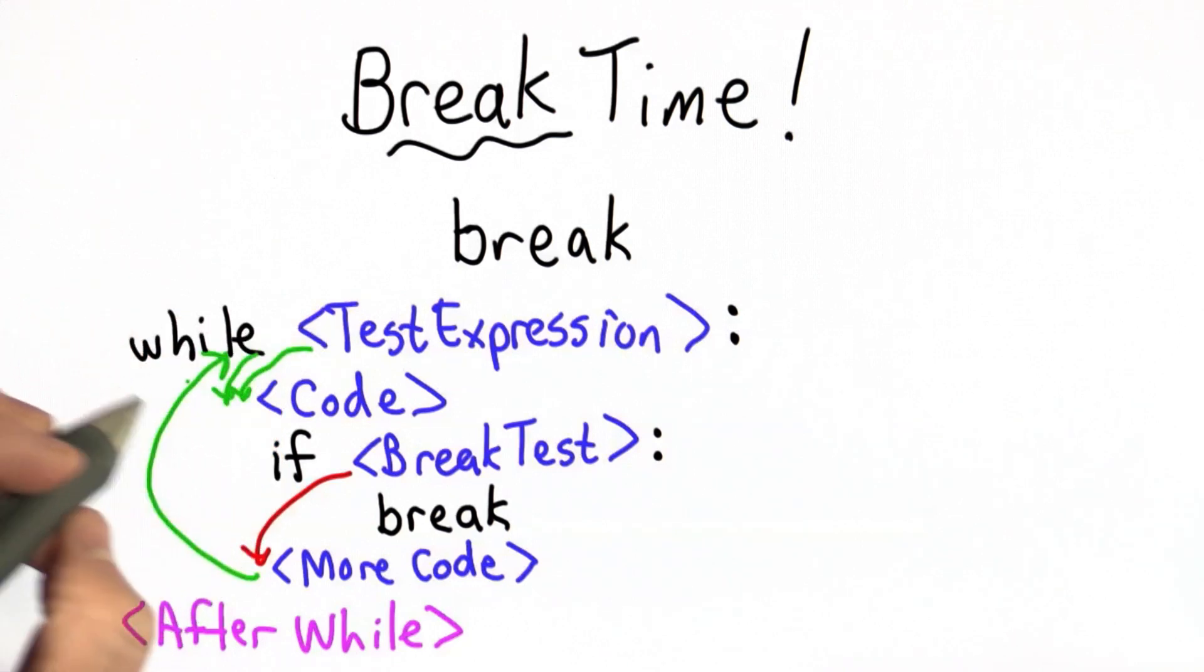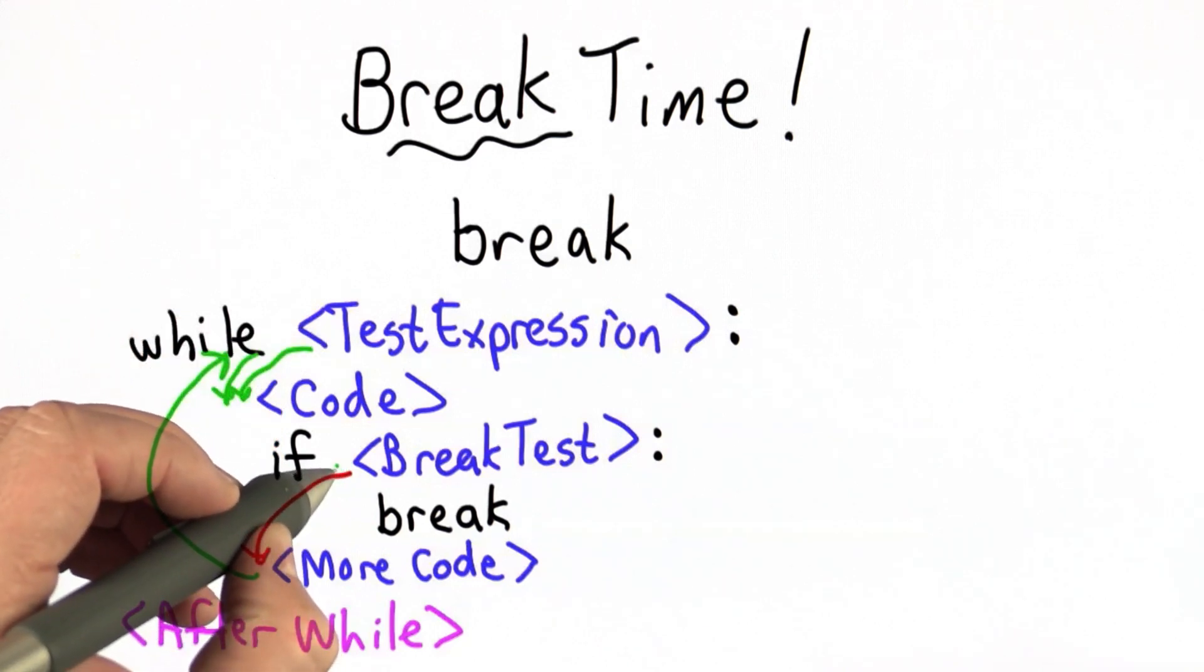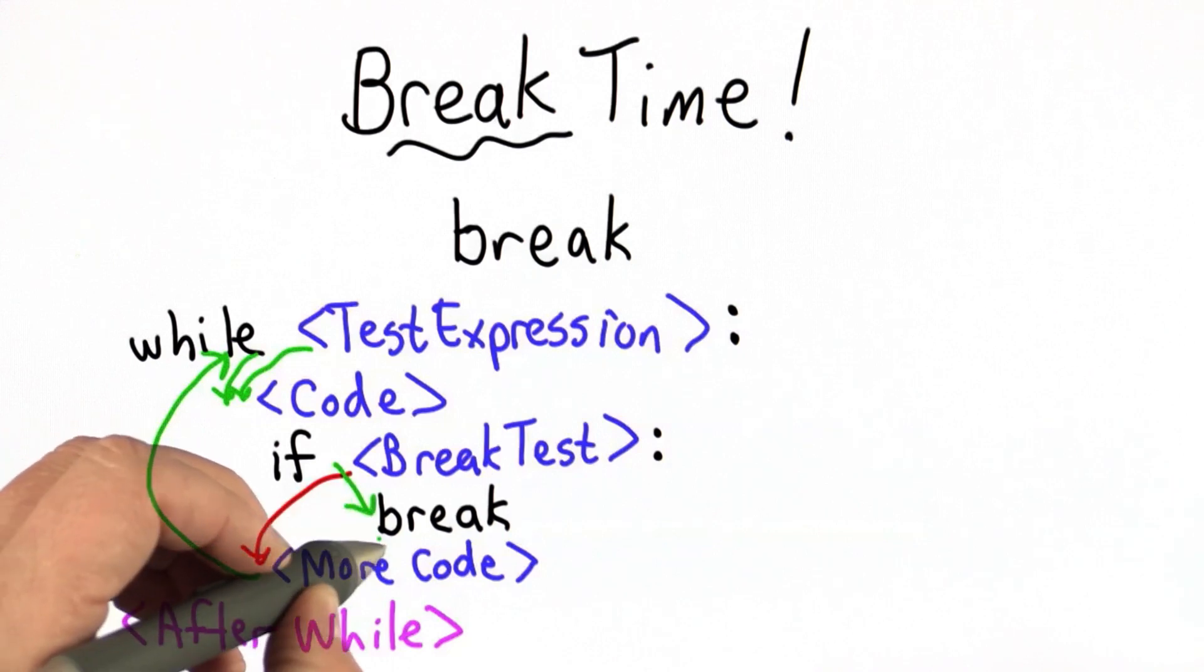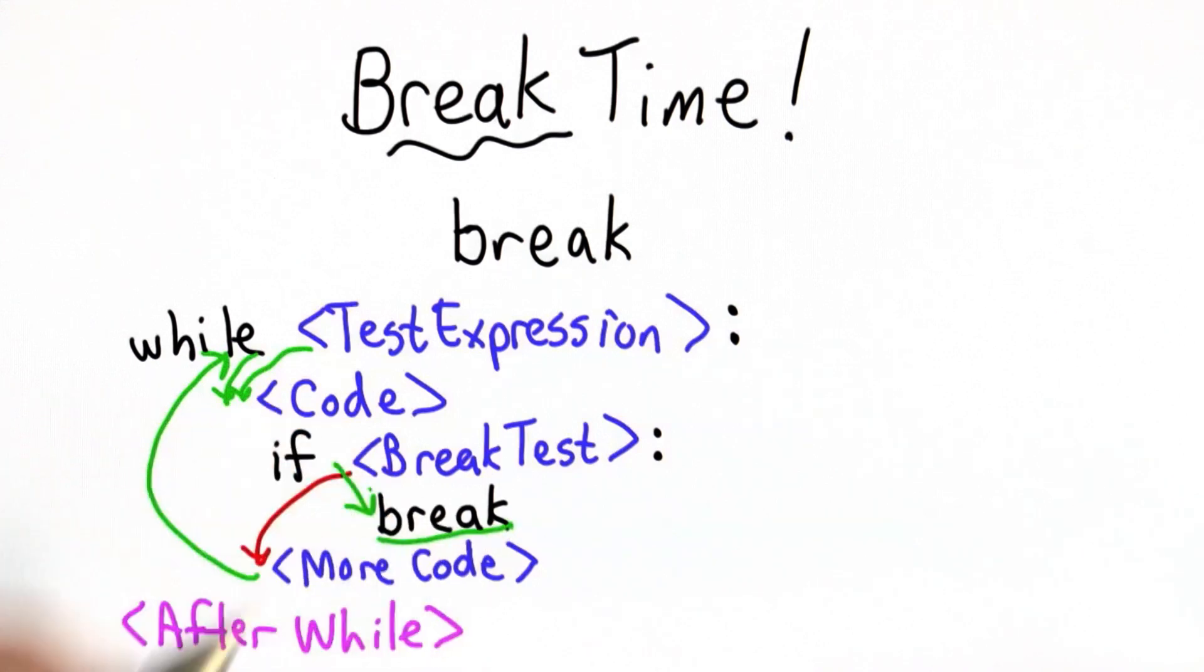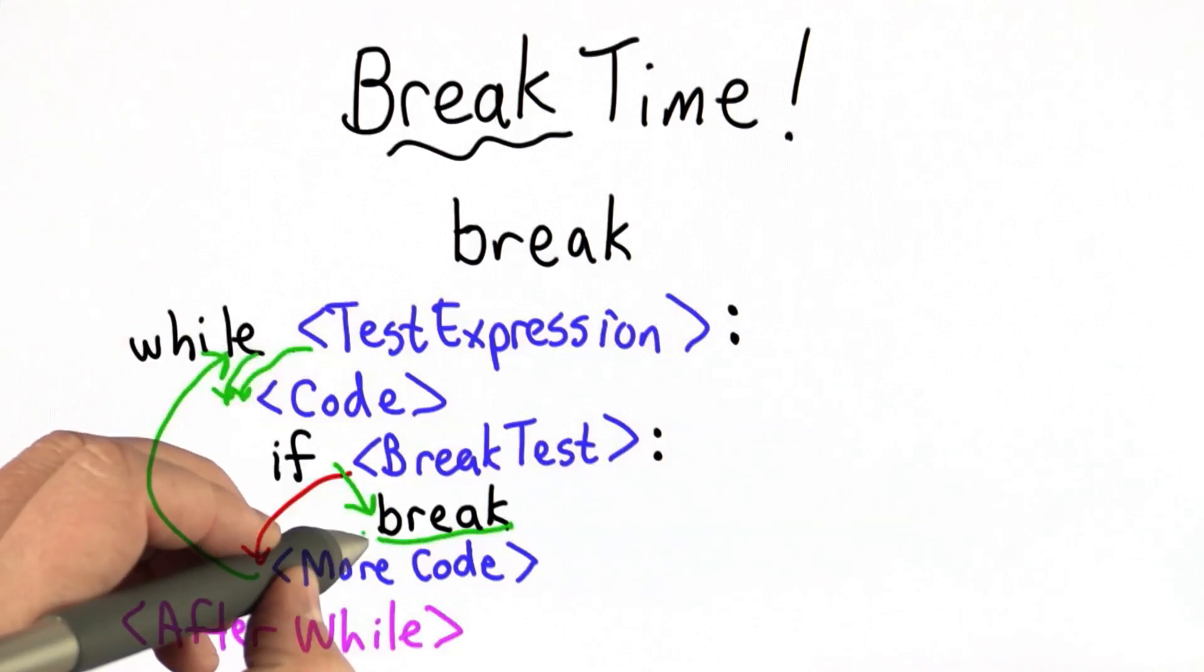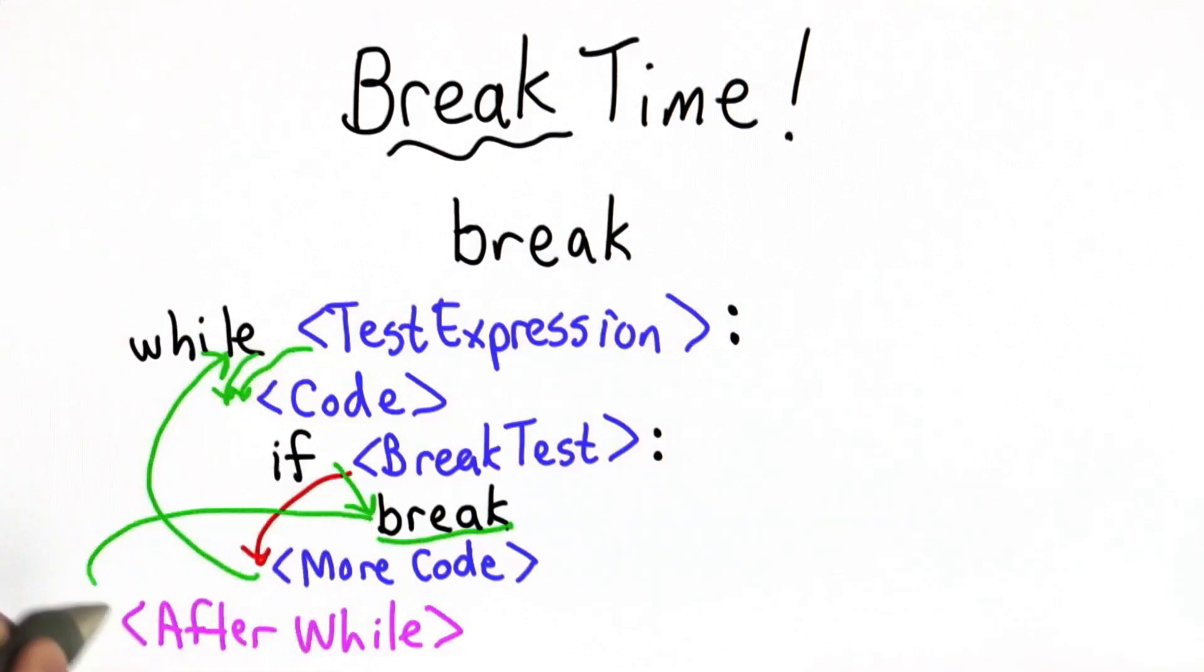If it's true, we run this code. If the break test is true, then we execute the break, and what break does is jump out of the loop. So we don't execute the more code, we don't execute the test expression again. If the break happens, what happens is we jump to the code after the while. This gives us a way to break out of the middle of the loop.